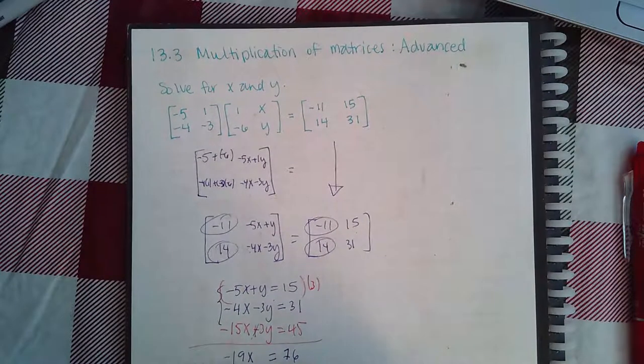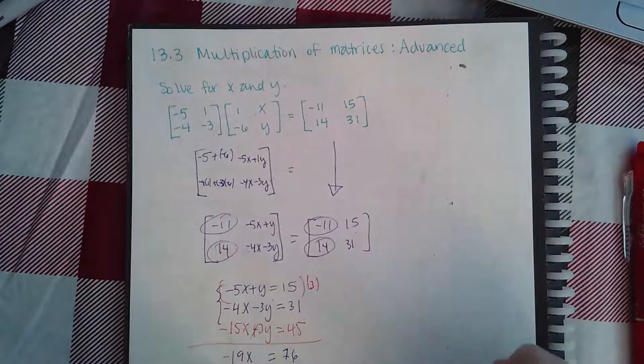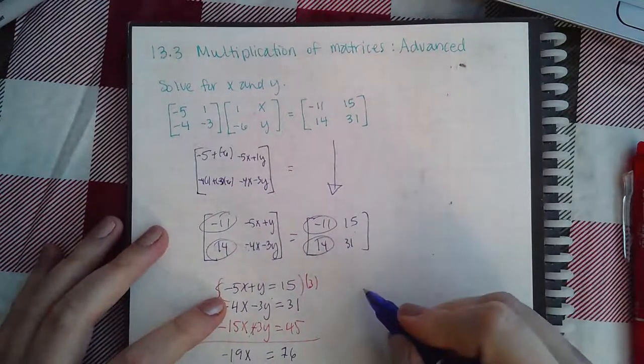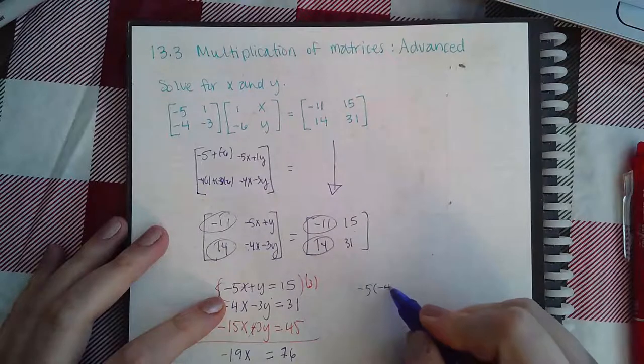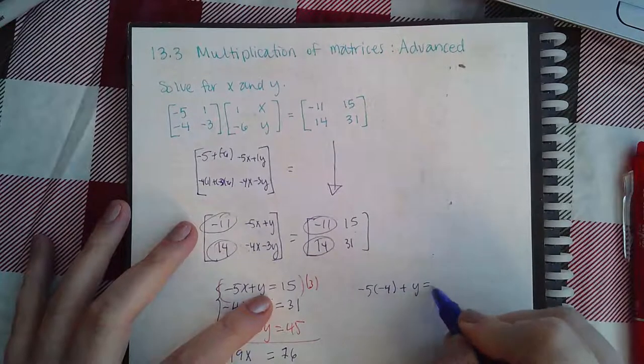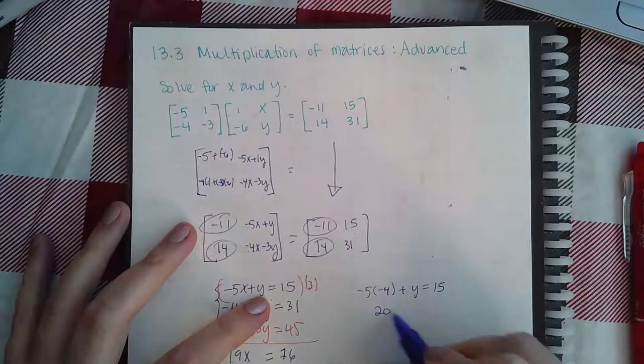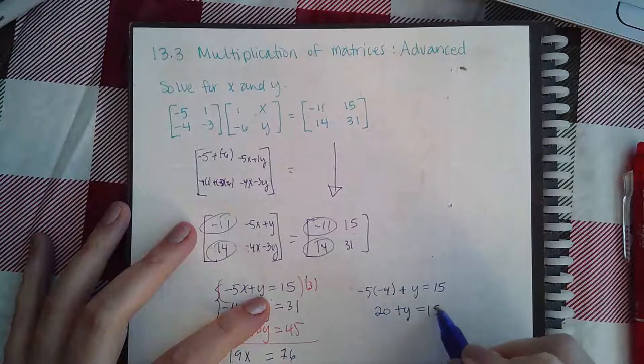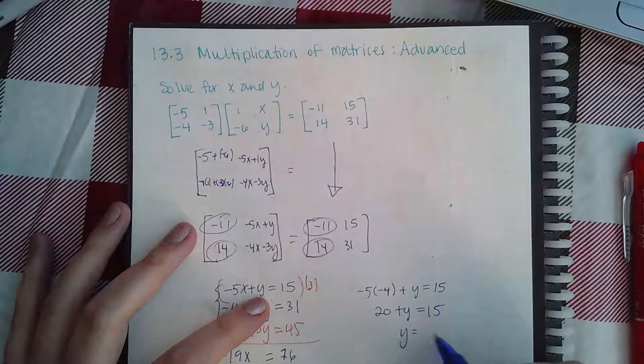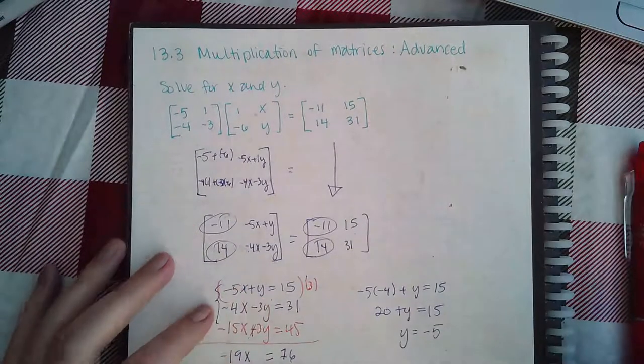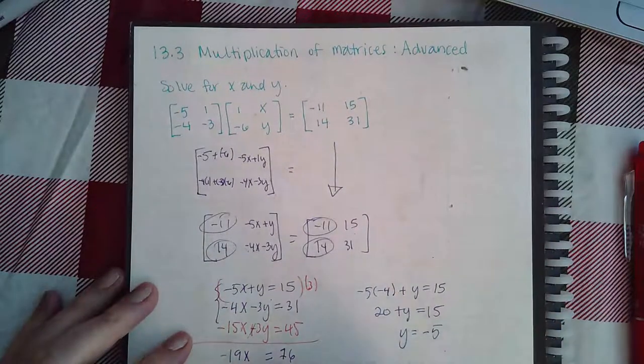I get that x equals negative 4. And then if I go back and plug in x into the top equation I get 20 plus y equals 15, so if I minus 20 on both sides I get y equals negative 5. So now I know the x value and the y value that I was asked to find.